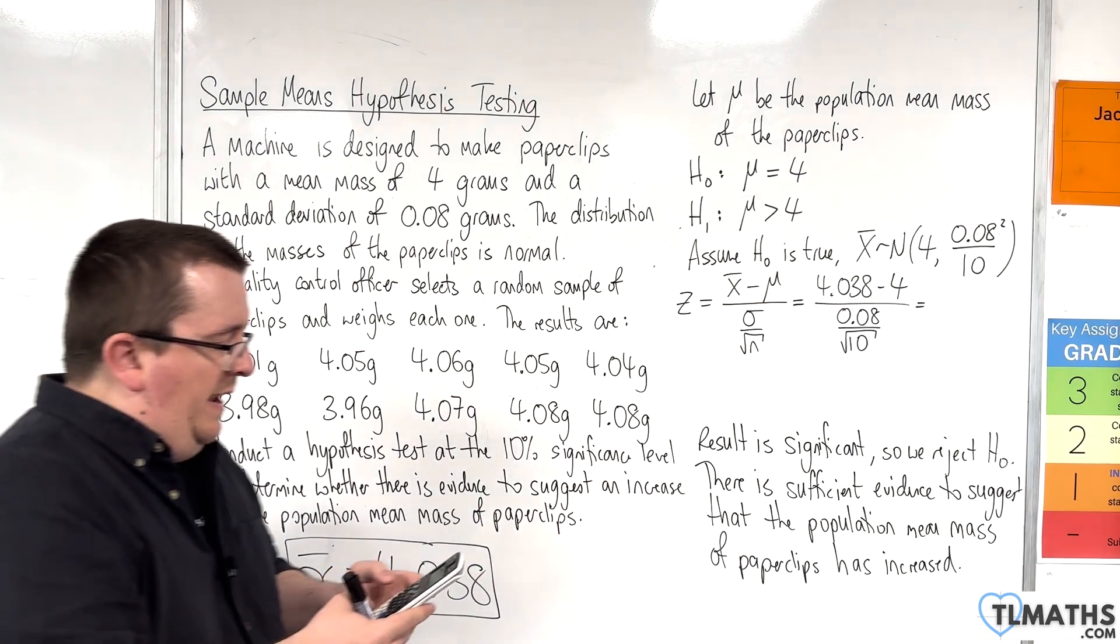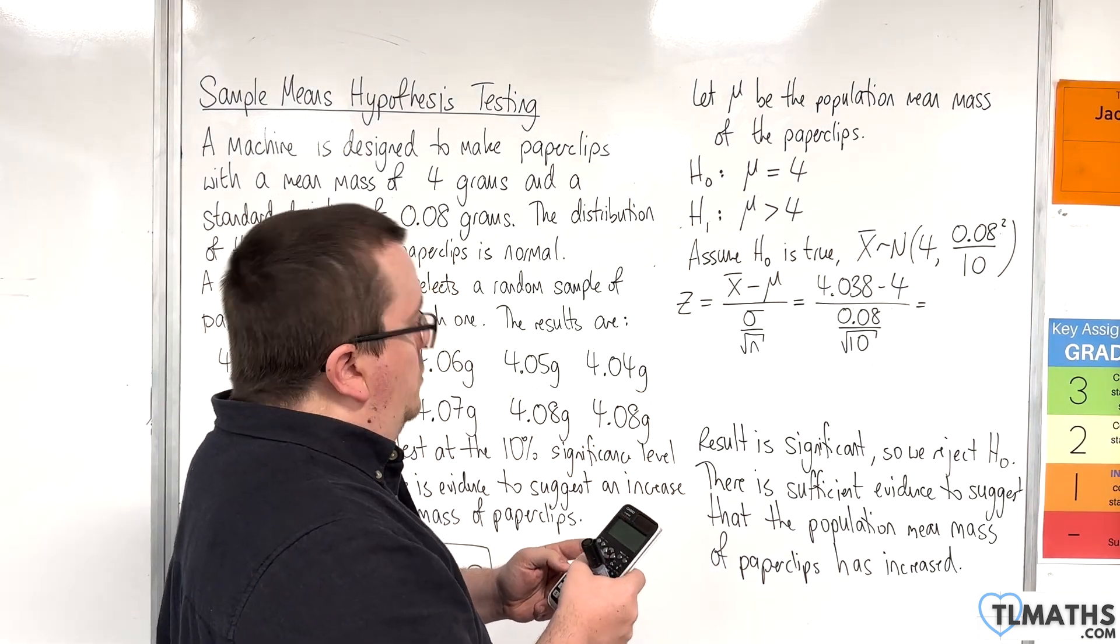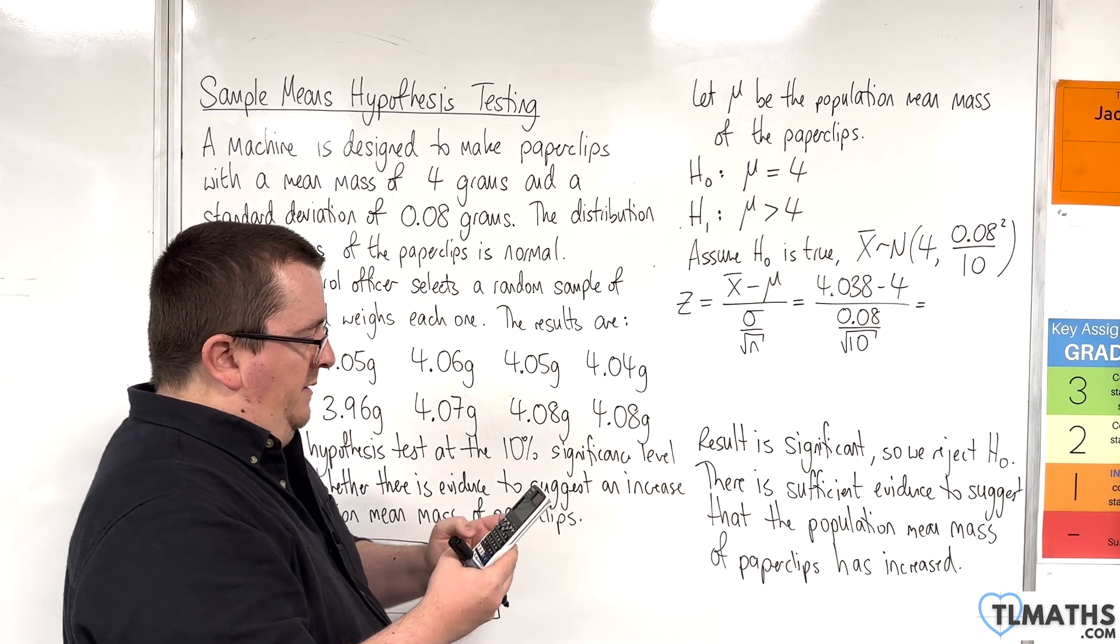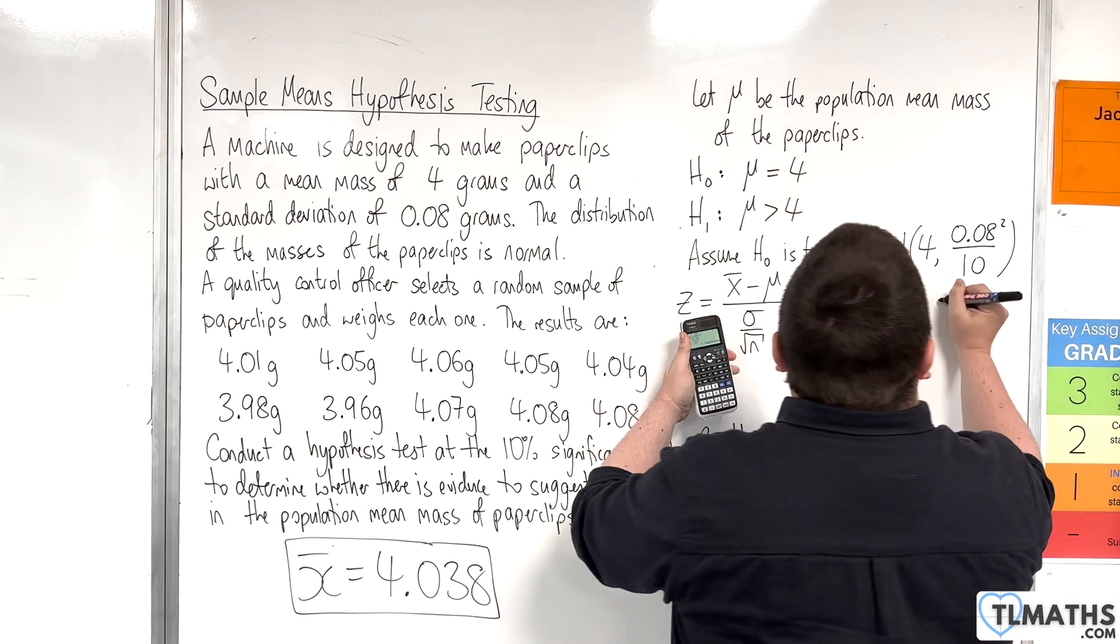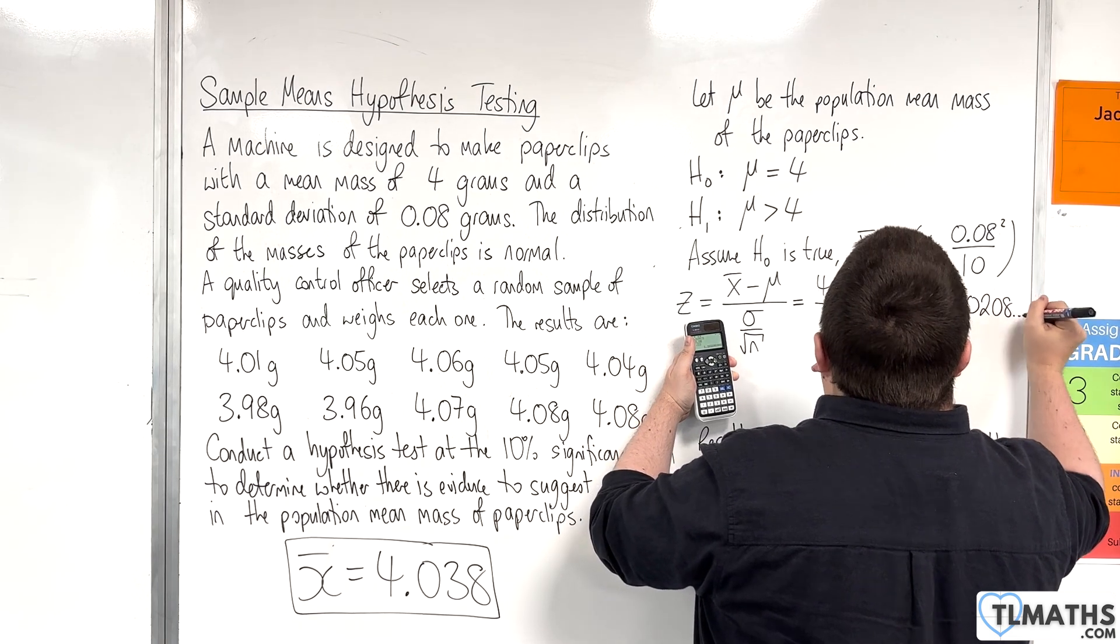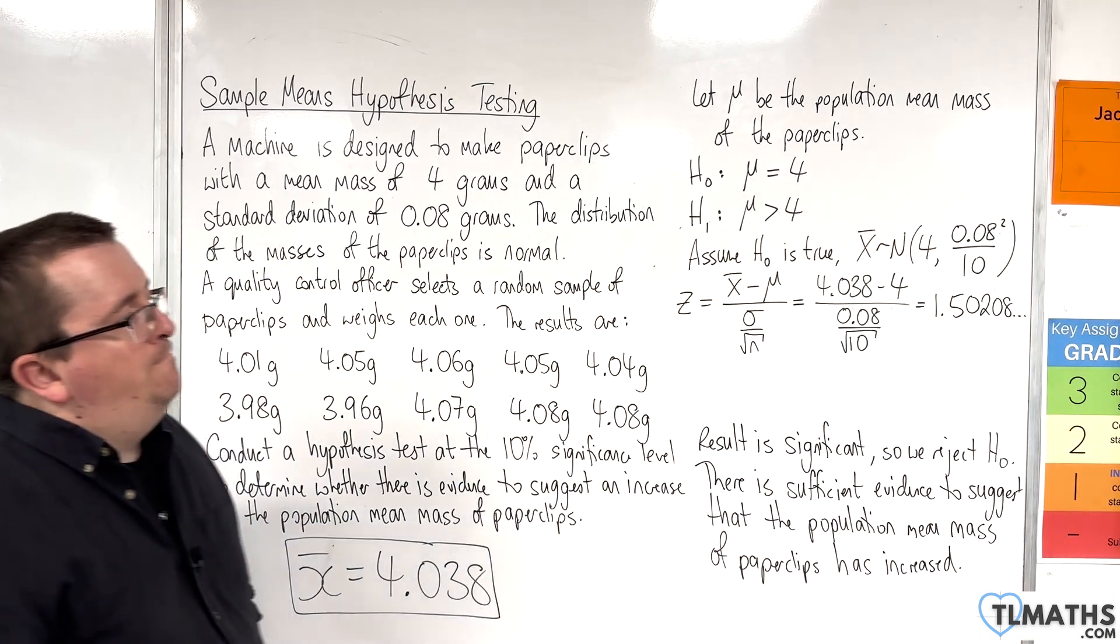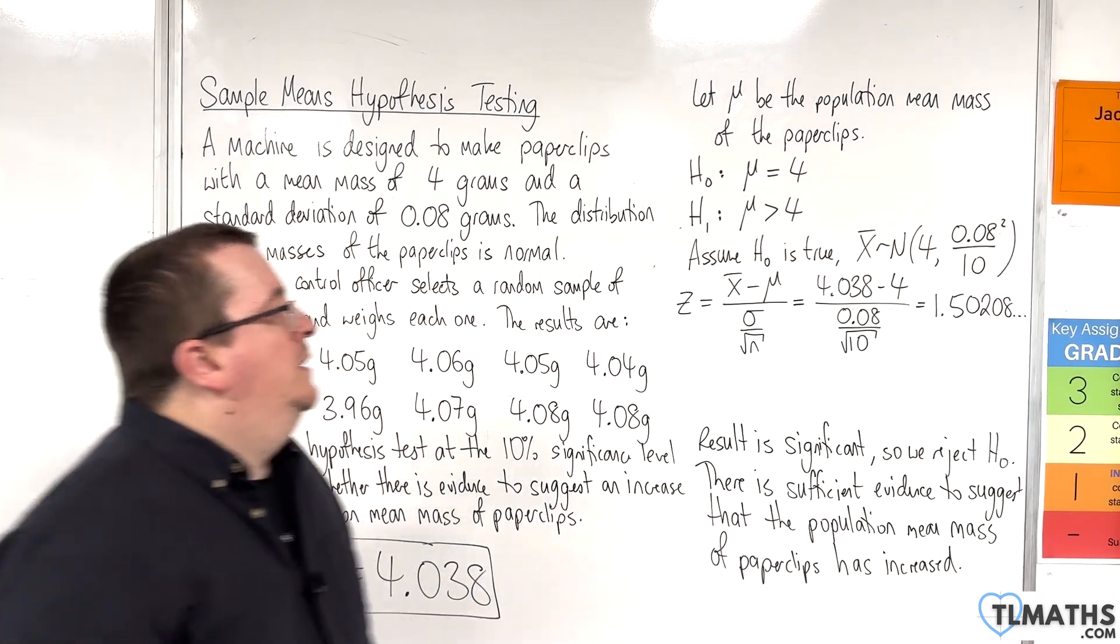So we plug that into our calculator: 4.038 take away 4 divided by 0.08 over the square root of 10. This is equal to 1.50208. We then need to know what to compare it against, so we need to look at the inverse normal.